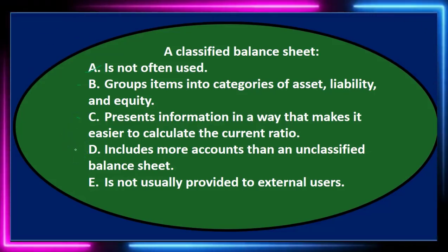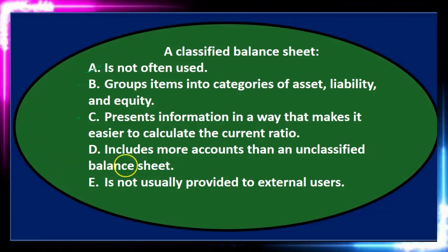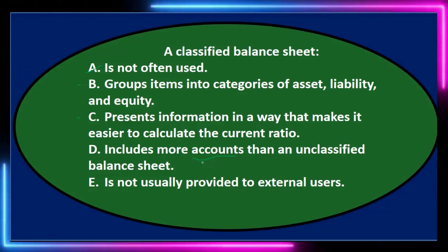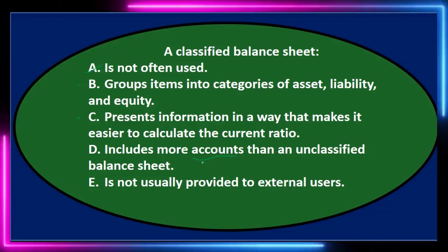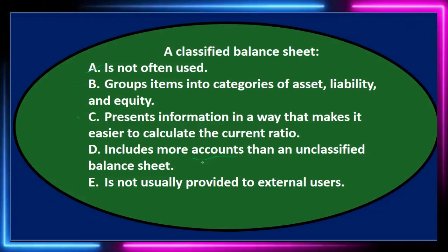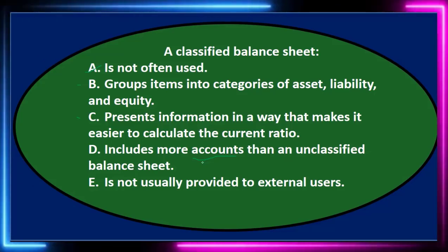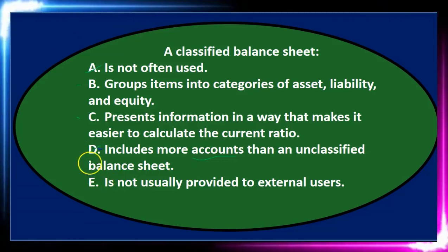D says: includes more accounts than an unclassified balance sheet. This one's a little tricky because it does have more account categories, but not more accounts. We're going to have the same number of accounts — cash, accounts receivable, equipment, buildings, and so on. The subcategories will differ. An unclassified balance sheet lists all accounts under assets, while a classified one groups them into categories. So there's the same number of accounts, just grouped in different formats. I'm going to cross that out.